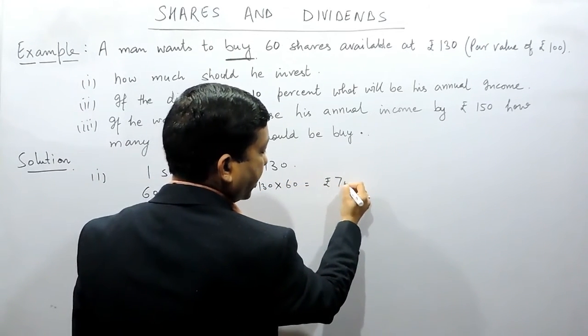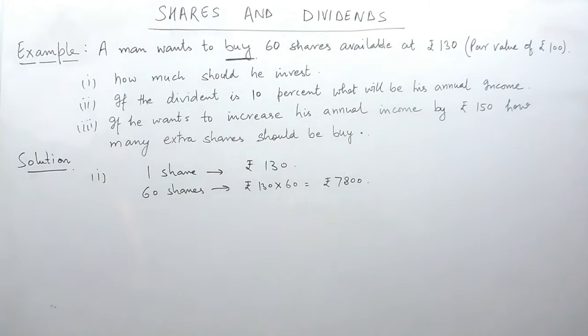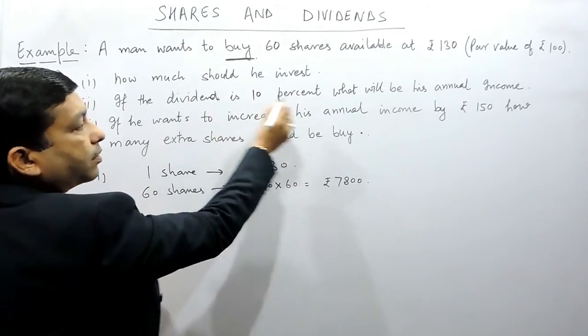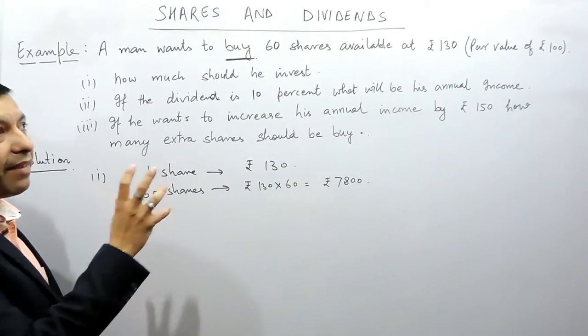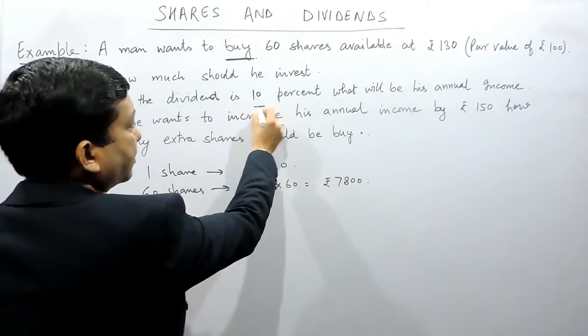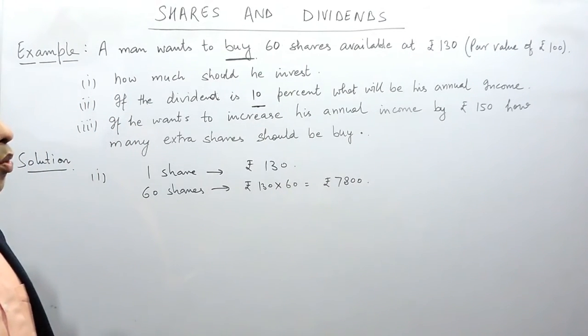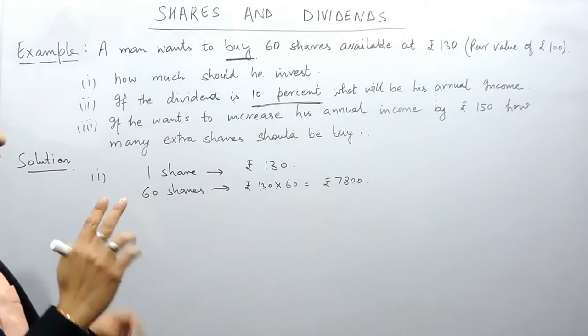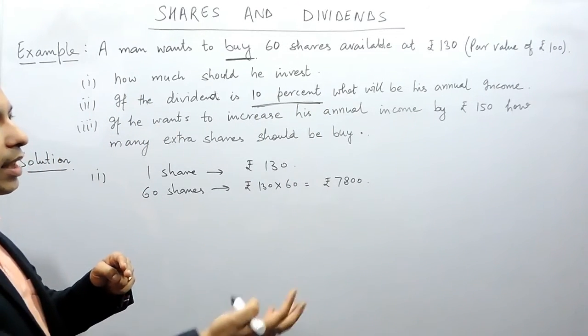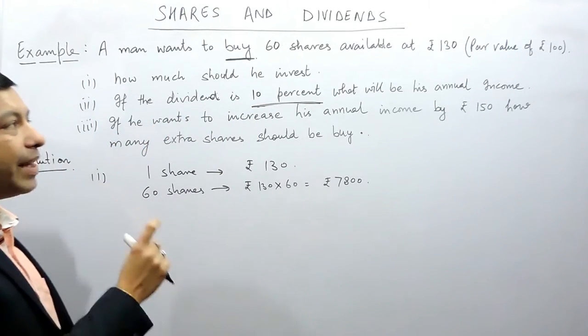The second part is: if the dividend is 10%, what will be his annual income? Now a very important aspect is that this percent is given by the company, or this is what the person is receiving. When we talk about the percentage of dividend, I already told you it is in two aspects: one the company is providing you, the other which you receive. Here the dividend is 10% means that the company is paying 10% dividend.